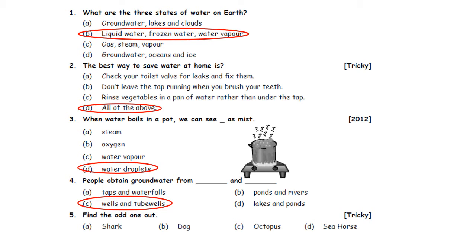Question five: Find the odd one out. A. Shark. B. Dog. C. Octopus. D. Sea horse. The odd one out is option B — dog. Dog is a terrestrial animal, whereas shark, octopus, and sea horse are aquatic animals that live in water. So option B is the correct answer.